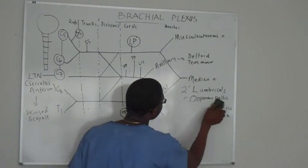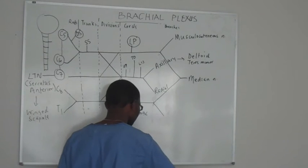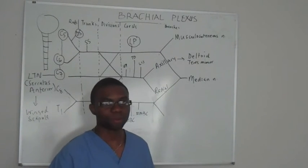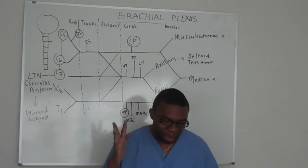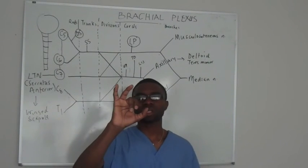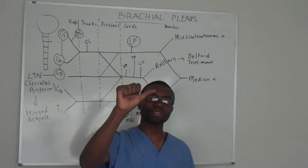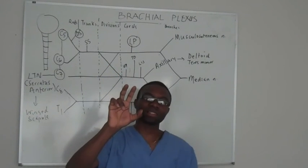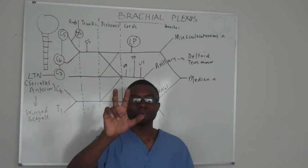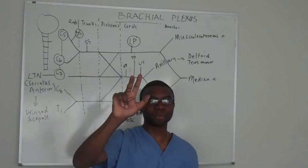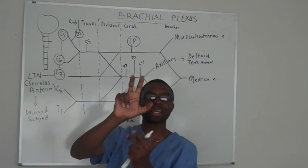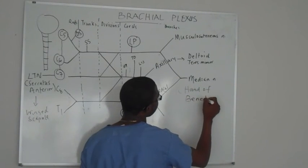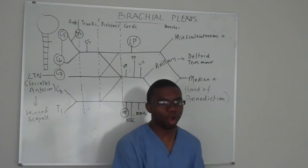Last but not least — if you damage the median nerve, what do you get? You get something called the hand of benediction. A patient comes into your office, you say 'make a fist,' and you normally have to flex everything including your thumb. But they can't flex their index and middle fingers — they can only do this. It kind of looks like the hand of a Pope sign. The ulnar nerve is still working but the median nerve is not, so their hand stays like that. This is a board-style question — they always get you.